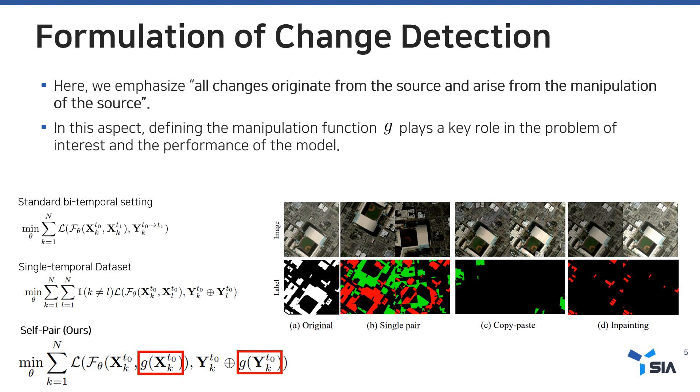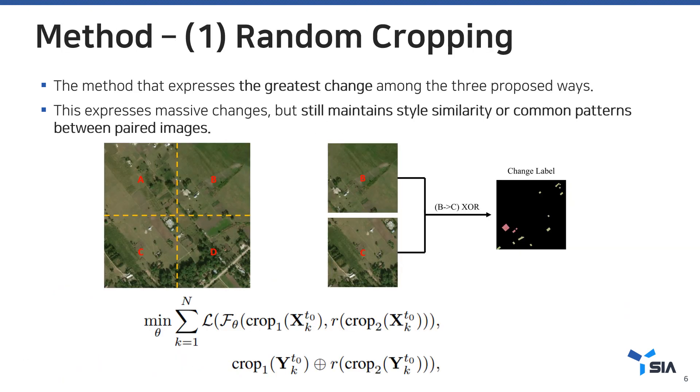In this research, we apply simple data augmentation: random cropping, copy-paste, and inpainting. Random cropping expresses the greatest change among the three methods. Since we crop two random parts from the whole image, it still maintains style similarity or common patterns between paired images.